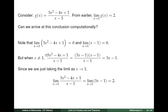Instead, what we can do is to recognize that the numerator 3x squared minus 4x plus 1 is factorable, and it can be expressed as the product of the linear factors 3x minus 1 and x minus 1. So, x minus 1 appears in both the numerator and the denominator. When x is not equal to 1, we can cancel the x minus 1 in the numerator and the x minus 1 in the denominator.